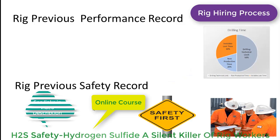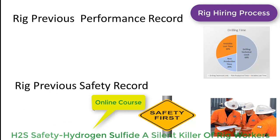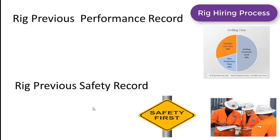The operator will also look at the rig's previous performance. They may ask about the contractor's previous track record — what maximum depth they drilled the well, how they completed the well within the time, and what problems they experienced. They will also review the rig's previous safety record, including how many accidents and injuries occurred, and evaluate different safety standard parameters to assess whether the rig crew works in a safe manner.